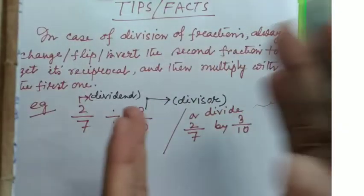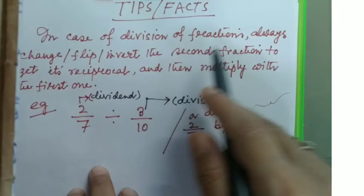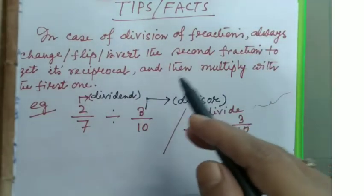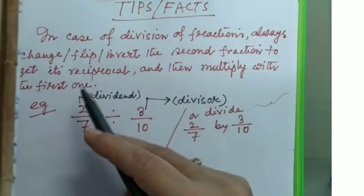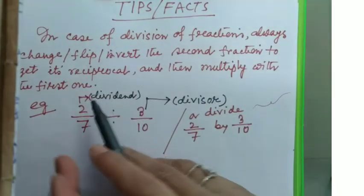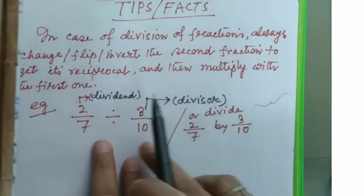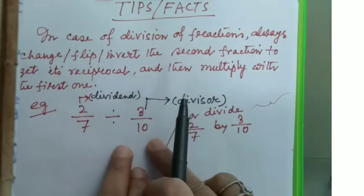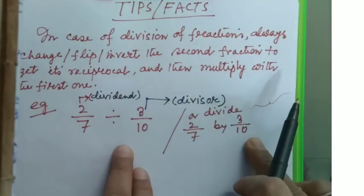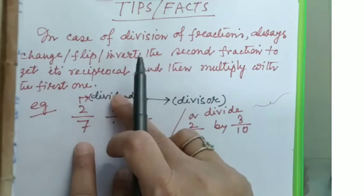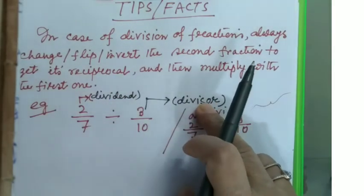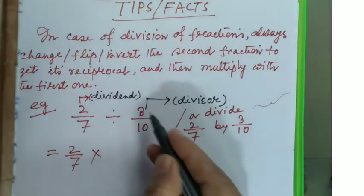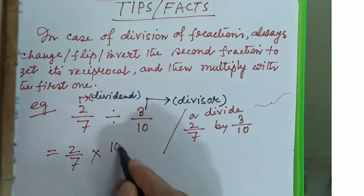This is tips time! In case of division of fractions, always change, flip, or invert—whatever you may say—the second fraction to get its reciprocal, and then multiply with the first one. For example, 2/7 ÷ 3/10, or divide 2/7 by 3/10. This one is the dividend and this one is the divisor.